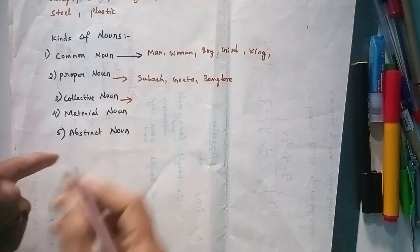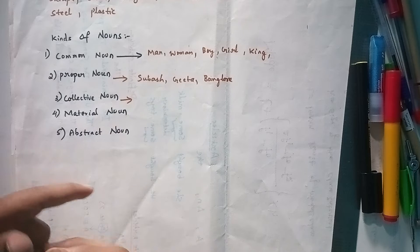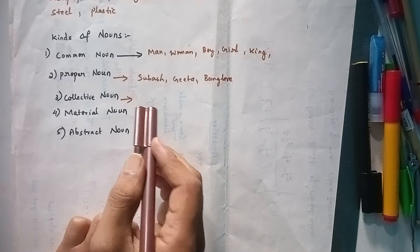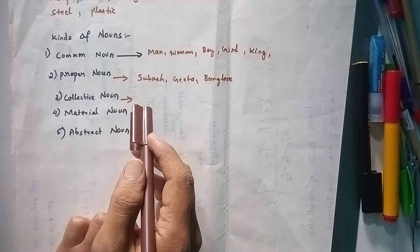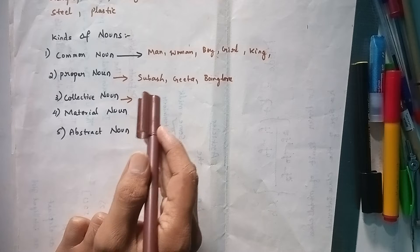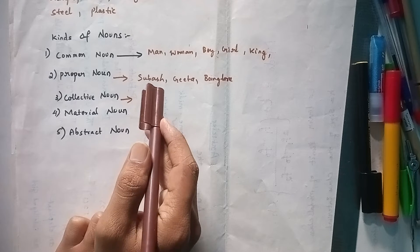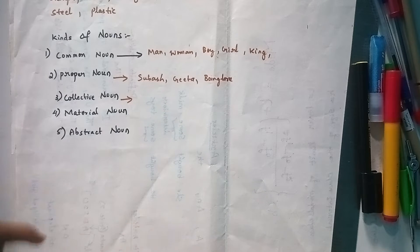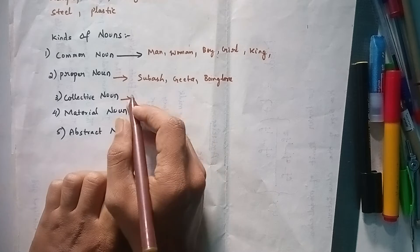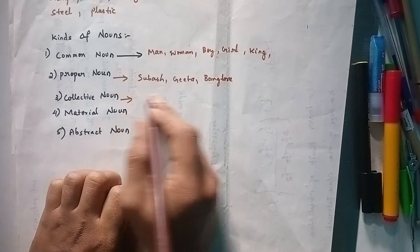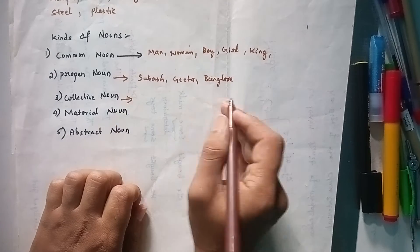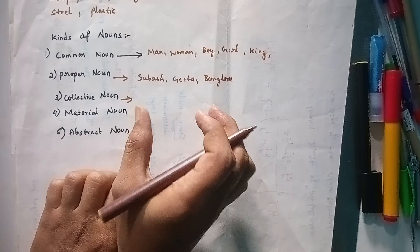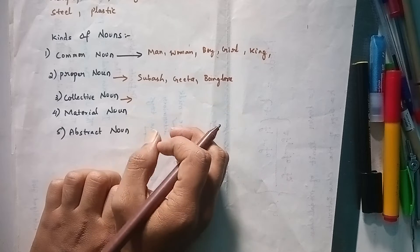A collective noun is the name of a number of persons or things taken together and considered as one whole. For example, if there are 100 chocolates, we call it a bunch of chocolates.